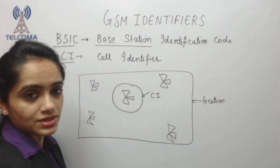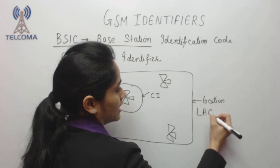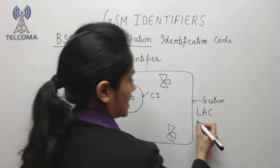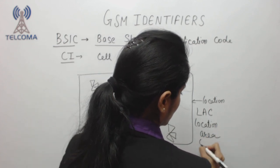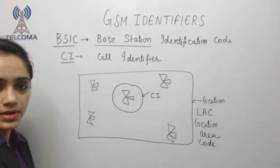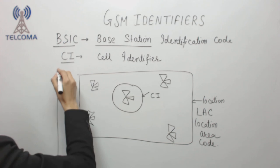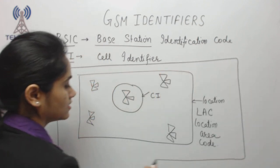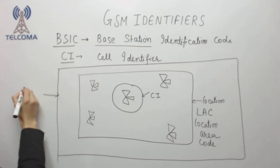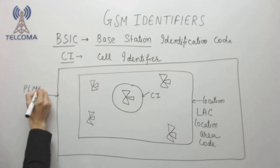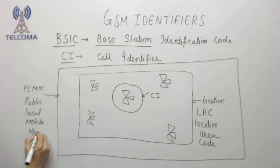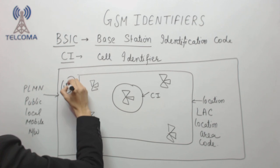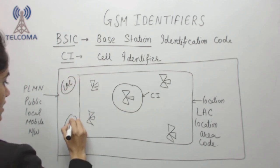For a particular location, we require a code, so we have LAC which stands for Location Area Code, used to identify the location. For a bigger area with multiple locations, we have PLMN — Public Land Mobile Network. This PLMN consists of various location areas identified by their location area codes.